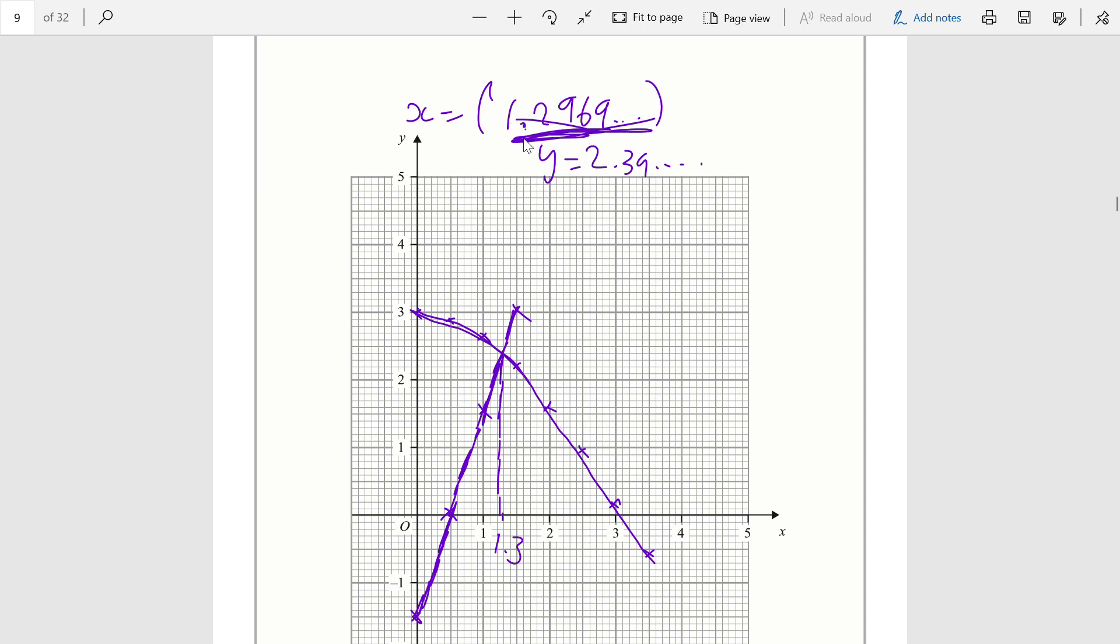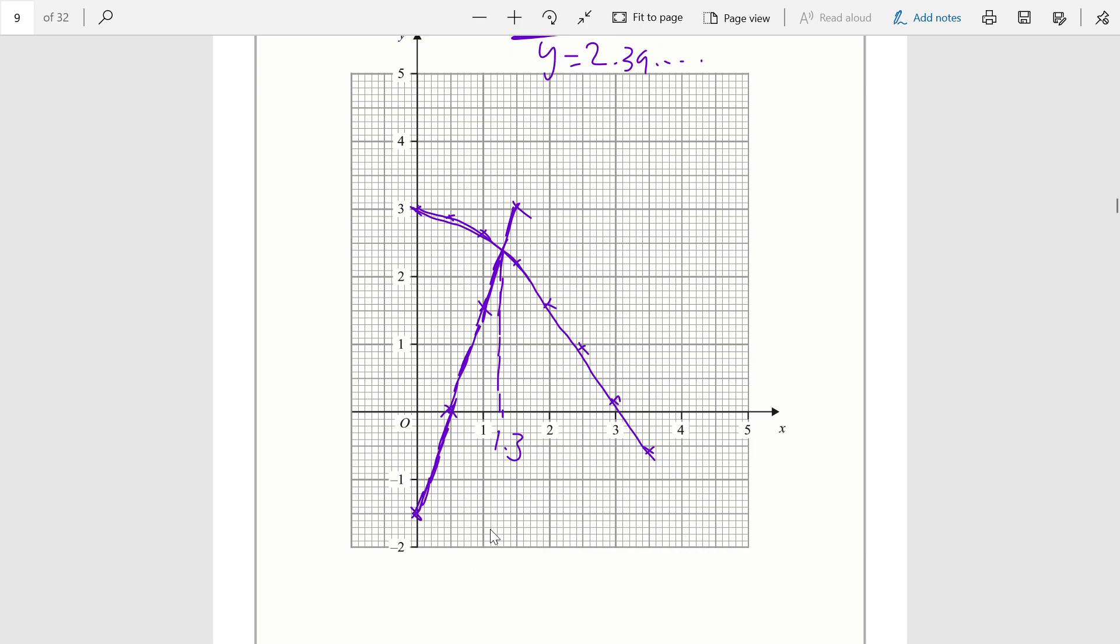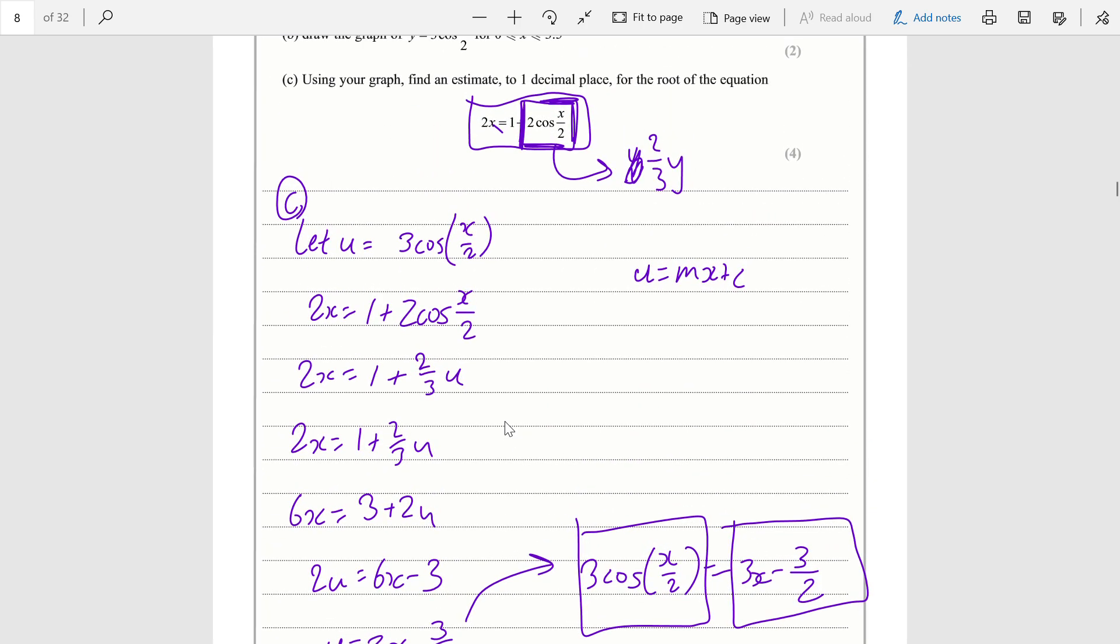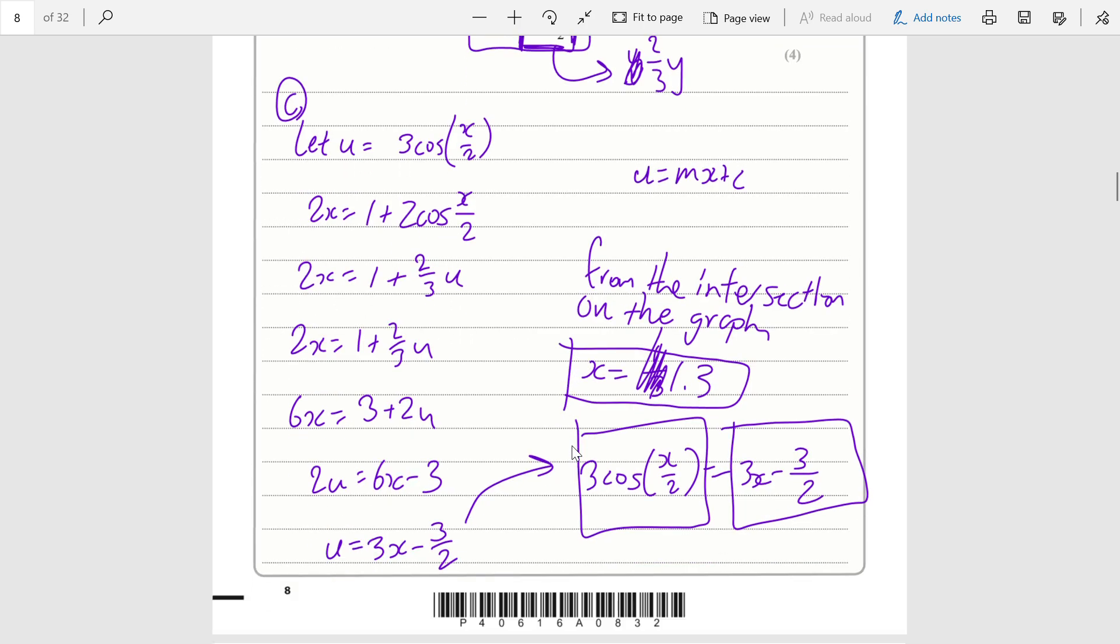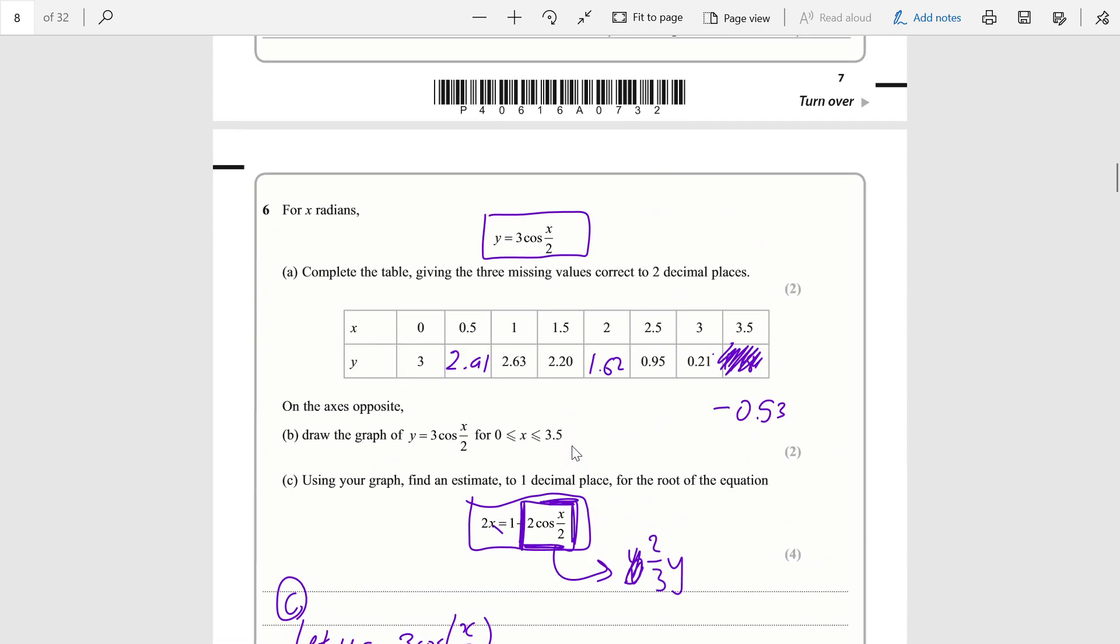If you're interested, the y was 2.39, but we are just looking for the solutions to x and this is the number we want. Given that it is from the graph, you're only expected to give the answer to one decimal place. You would write from the intersection on the graph, x would be equal to 1.3. Make sure you write your answers correctly. That is all for this question, thanks for watching.